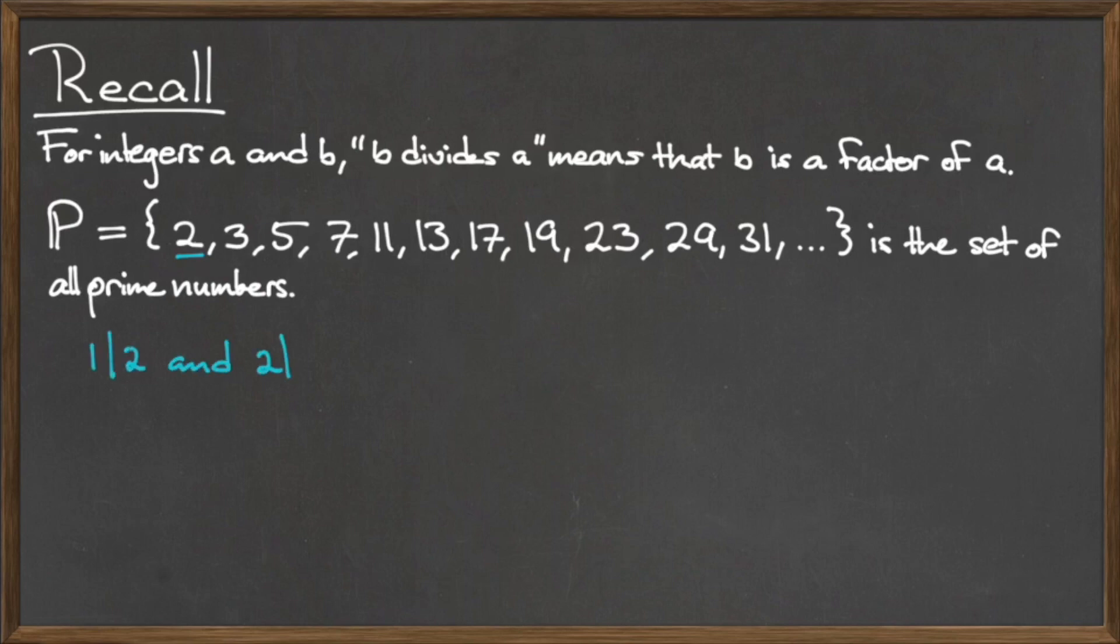Let's start with the number 2. If we restrict ourselves to only positive divisors, then the only two positive integers that divide 2 are 1 and 2 itself. So we could write 1 divides 2 and 2 divides 2.